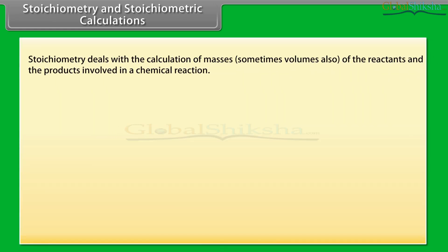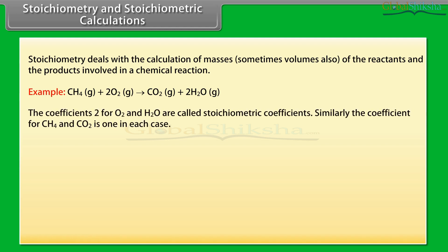Stoichiometry and stoichiometric calculations: stoichiometry deals with the calculation of masses, and sometimes volumes, of the reactants and products involved in a chemical reaction. For example, CH₄ plus 2O₂ gives CO₂ plus 2H₂O. The coefficients 2 for O₂ and H₂O are called stoichiometric coefficients; the coefficient for CH₄ and CO₂ is 1 in each case.